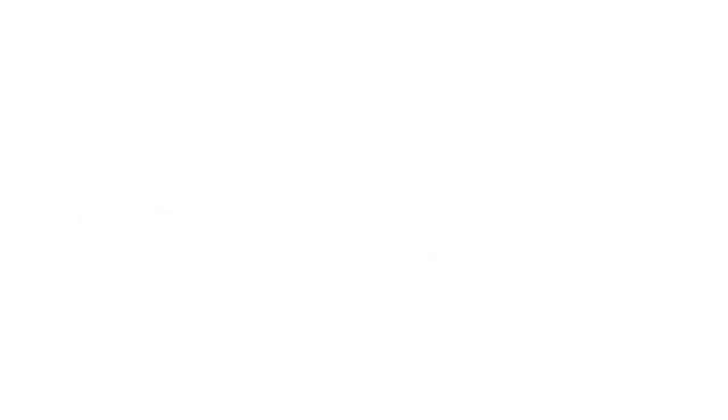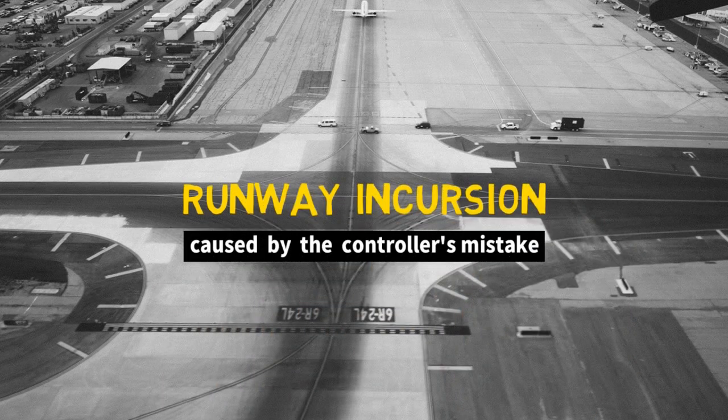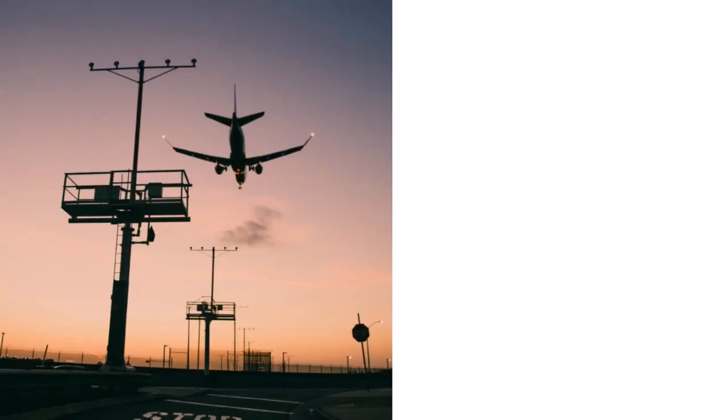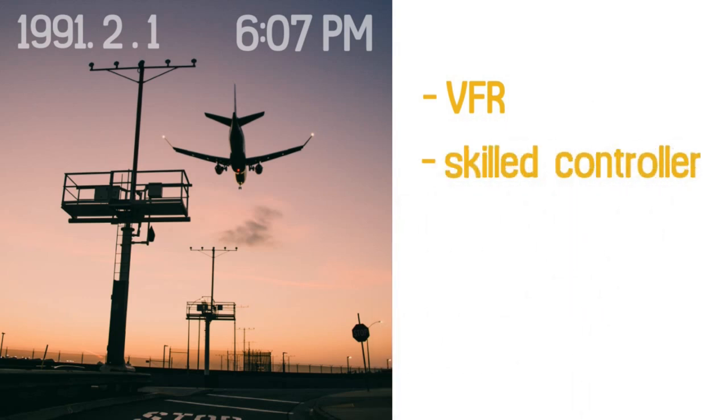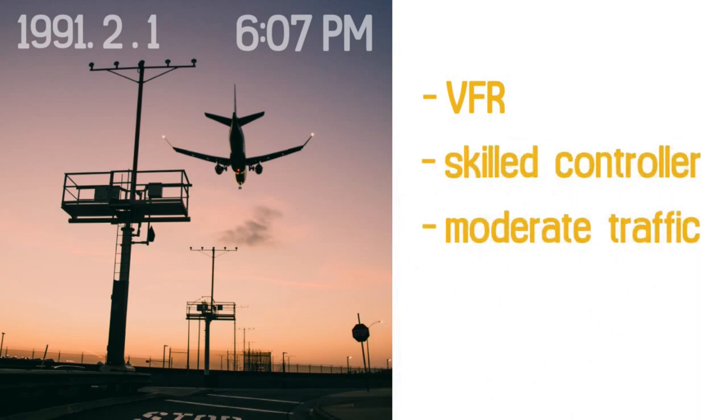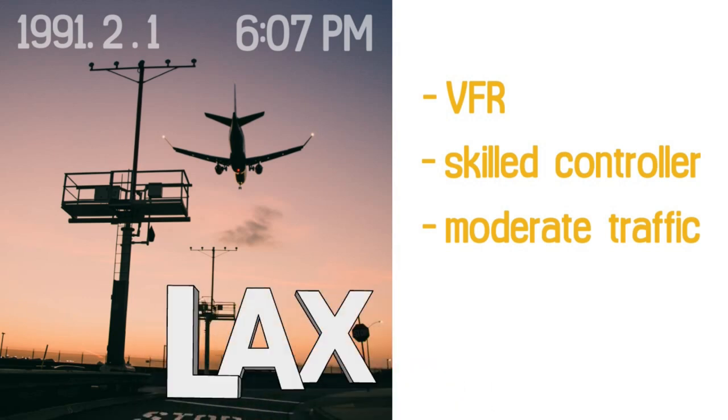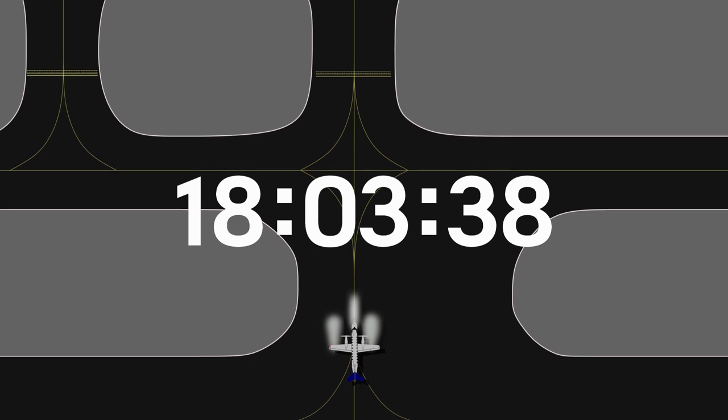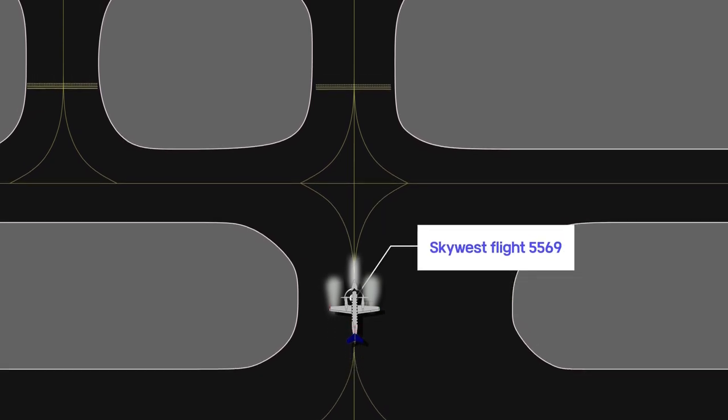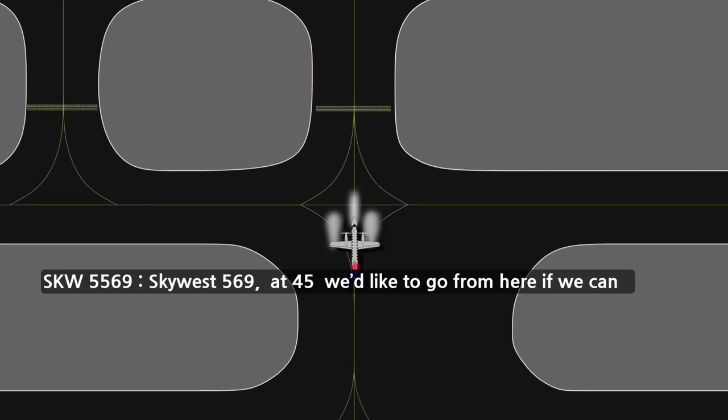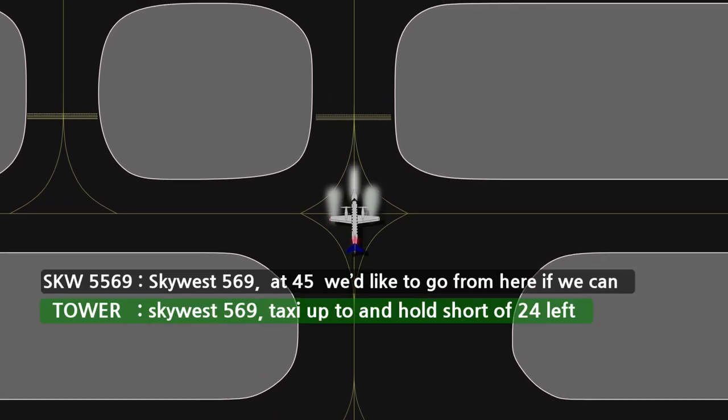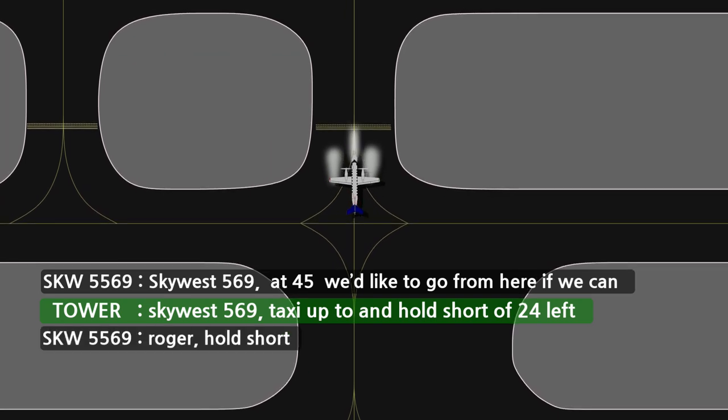The most famous runway incursion accident caused by the controller's mistake occurred at around 6:07 PM on February 1st, 1991. Despite VFR weather conditions, skilled controllers and moderate traffic, an incredible aircraft crash broke out on the runway of Los Angeles International Airport. When a Metroliner Type Skywest 5569 made a takeoff request from taxiway 45, the controller instructed the pilot to hold short of runway 24L, and the pilot read back.